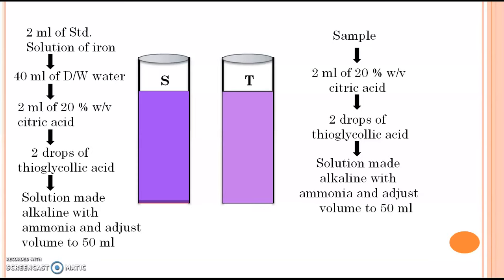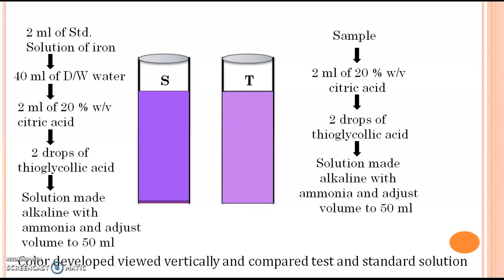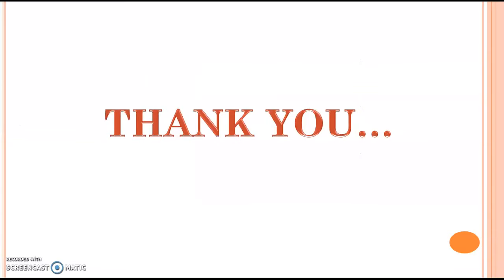Stir both solutions and compare them. Compare the color intensity of the test solution with the standard. If the color intensity of the test solution is less than that of the standard, then it complies with the IP limit. If the color intensity of the test solution is more than that of the standard, then it does not comply with the IP limit and the sample cannot be used further. So here we discussed the limit test for iron — the basic principle, the reaction, and the procedure. Hope all of you understood this. Thank you and happy learning.